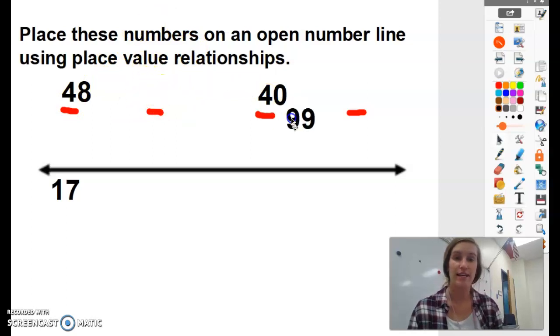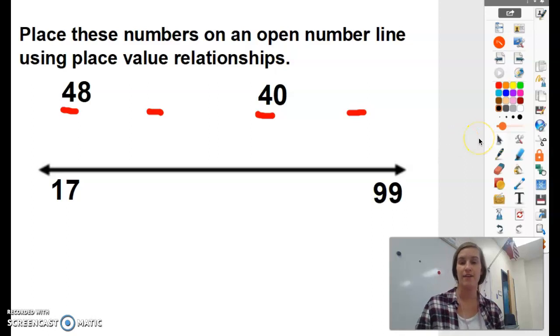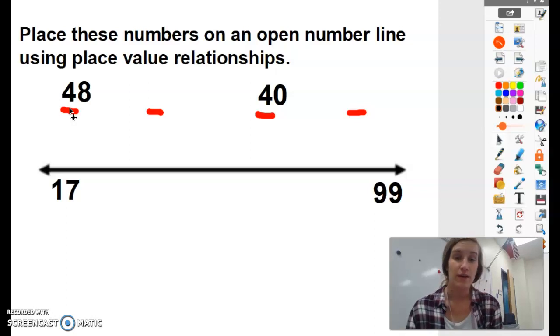So I can actually take 99 and put it at the end of my number line. And now I need to place the numbers 40 and 48 on my open number line. So we have 17 is the smallest. We know that 99 is the greatest. Which number would come next after 17? 40 or 48? 40 would.